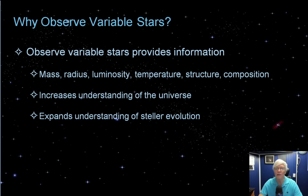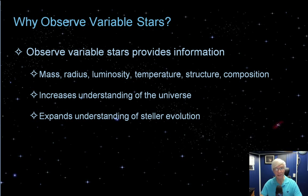Just prior to 1923, we did not know the true size of the universe — we thought the entire universe was composed of our Milky Way galaxy. It turns out that all those little faint, fuzzy, nebulous cloud-like objects you see in a telescope are, in fact, separate galaxies outside of our own. It was through the observation of a particular type of variable star in what we didn't yet know was another galaxy that enabled humans to determine how big the observable universe really is.